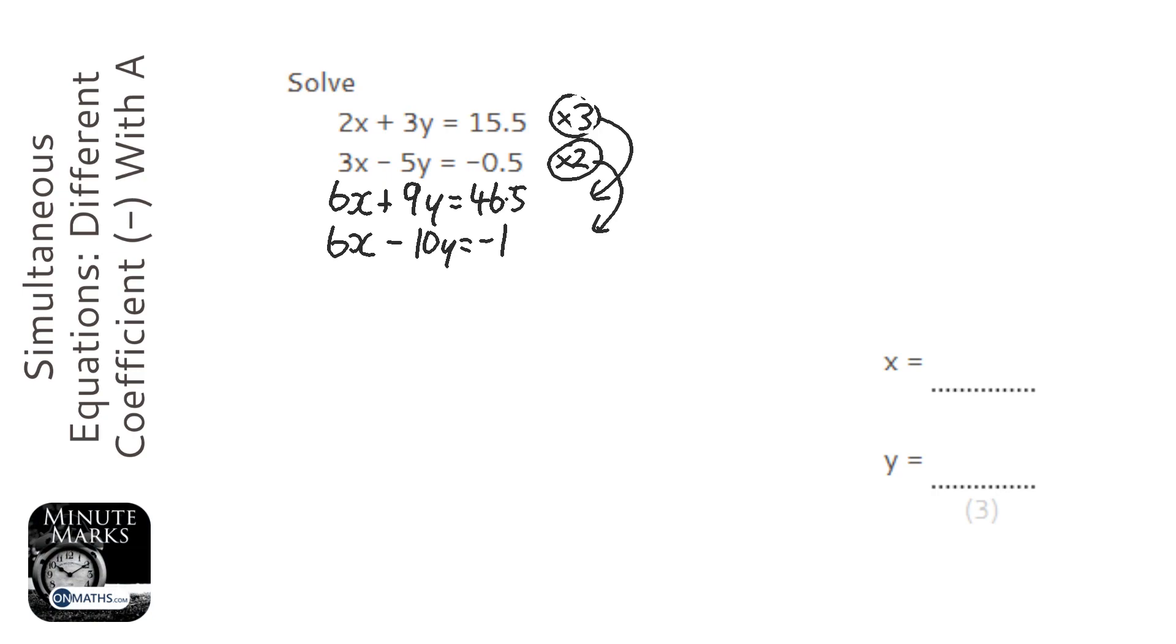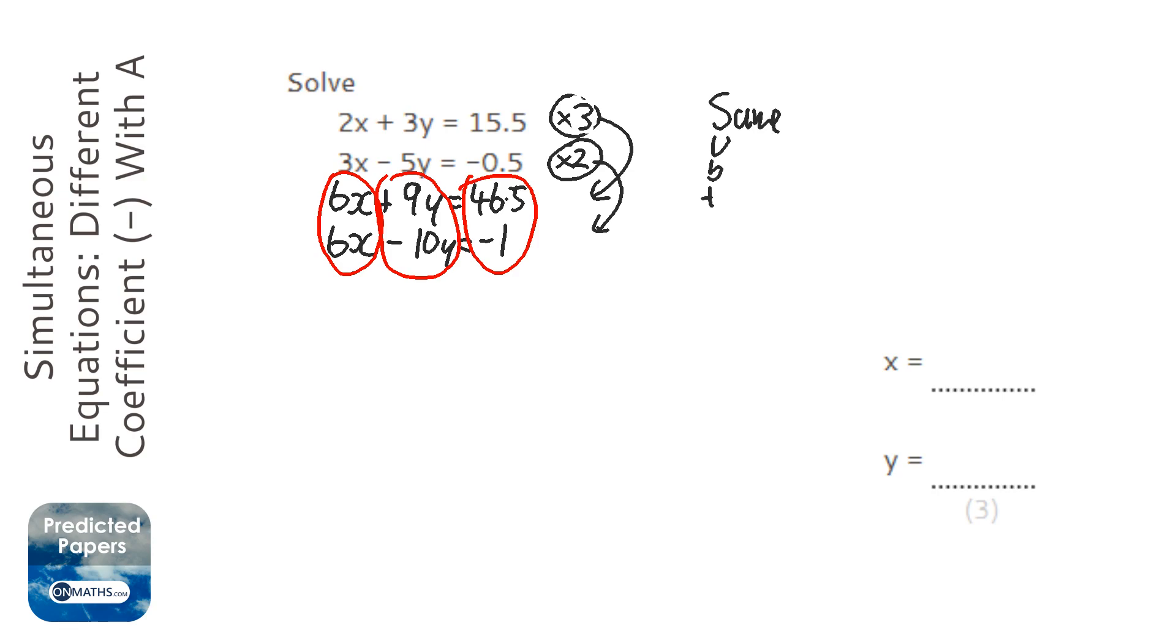Okay, with simultaneous equations we work downwards and the rule is: if the signs are the same we subtract, if the signs are different we add. Now the 6x and the 6x are both positive so they are the same, so we're going to subtract going downwards.